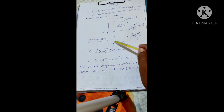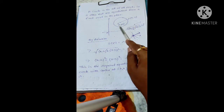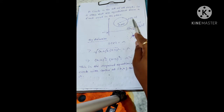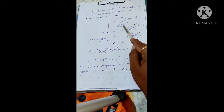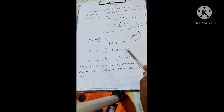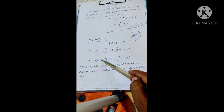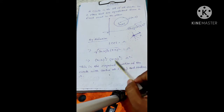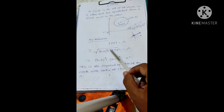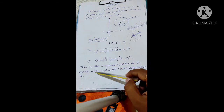If I use the distance formula in CP, where x is x2 and h is x1, I can write: the square root of (x minus h) squared plus (y minus k) squared equals r. Now, removing the root by squaring both sides, we get: (x minus h) squared plus (y minus k) squared equals r squared. This is the standard form of a circle — the equation of a circle with center (h, k).